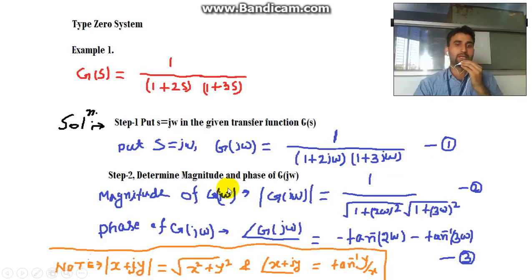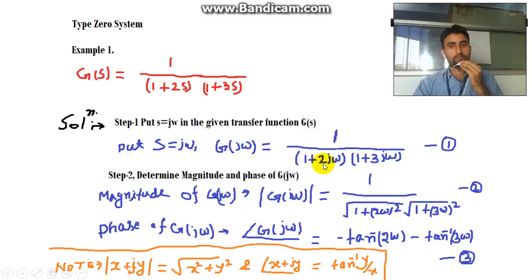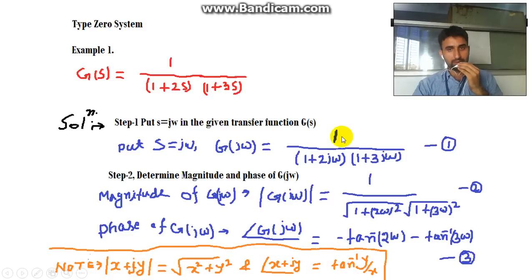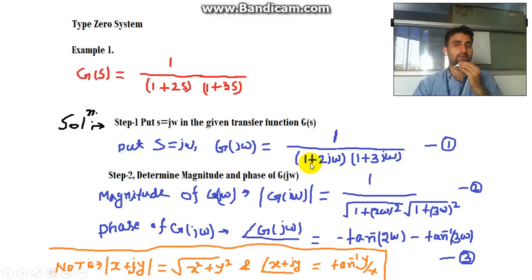Step 2 is to determine the magnitude and phase of G(jω). The magnitude, denoted |G(jω)|, equals 1 divided by [√(1 + (2ω)²) × √(1 + (3ω)²)]. The phase, denoted arg G(jω) or angle of G(jω), is found from the denominator terms — since both factors are in the denominator, the angle is negative: minus tan⁻¹(2ω) minus tan⁻¹(3ω).